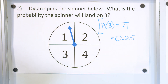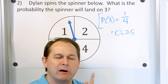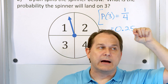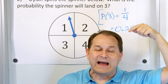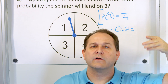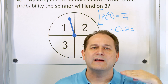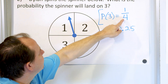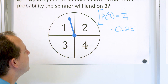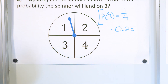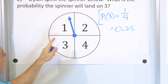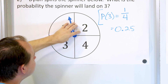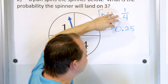The answer is one fourth, meaning 25% of the time you'd expect to land on the number three — about a quarter of the time. If I spin this spinner a hundred times, multiplied by one fourth, that means I'd expect to land on that position 25 times.